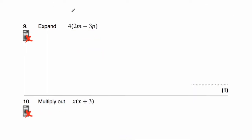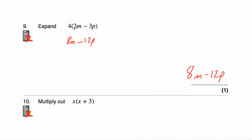Question number nine asks us to expand 4(2m − 3p). We need to multiply what's inside the brackets by four. Four times 2m — four times two is eight — so four times 2m would be 8m. Then we've got minus. And four times 3p — four times three is twelve — so 12p. The answer is 8m − 12p.